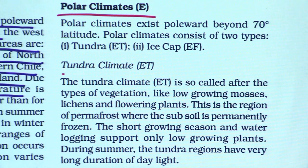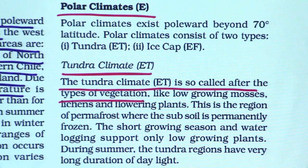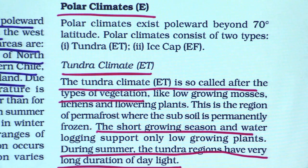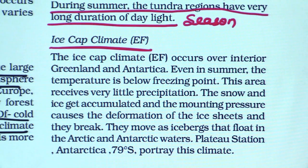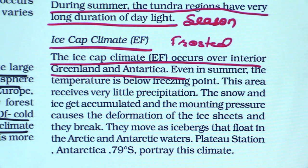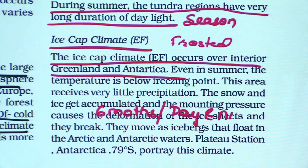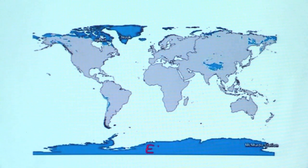E-type polar climate: ET tundra climate has a short growing period with seasons present — it is subpolar climate with very long day-night cycles. EF frosted climate has no season cycle at all — perennial ice with 6 months of day and night sequence.